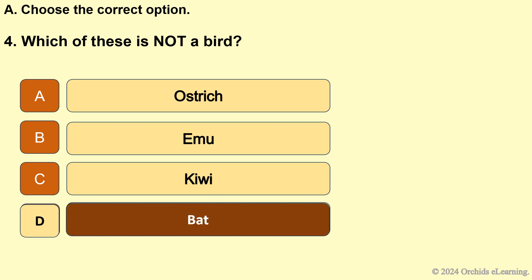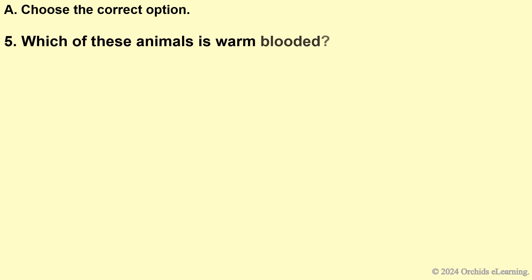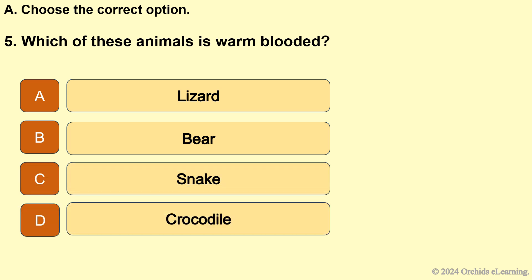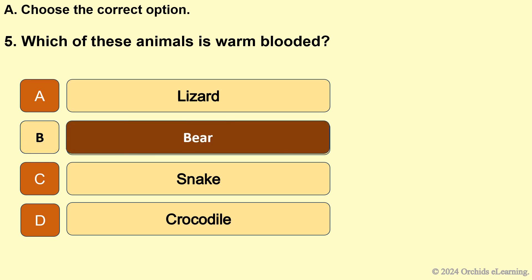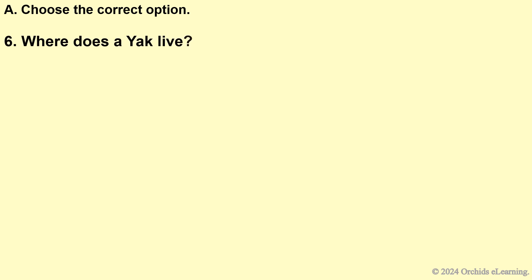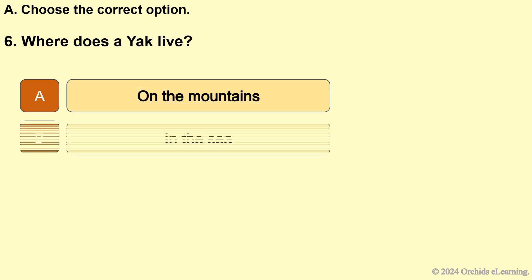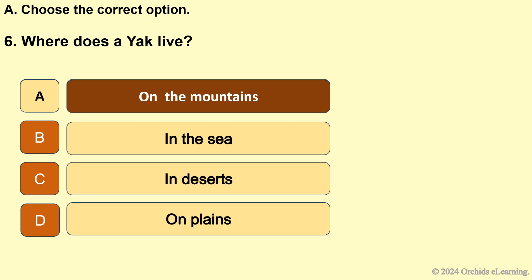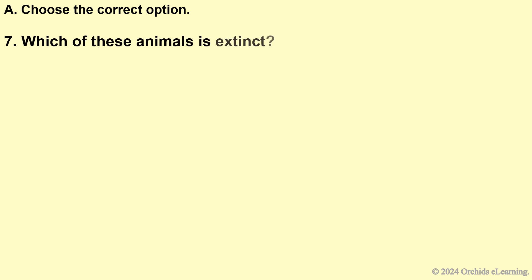Answer: D — bat. Which of these animals is warm-blooded? Answer: B — bear. Where does a yak live? Answer: A — on the mountains. Which of these animals is extinct?